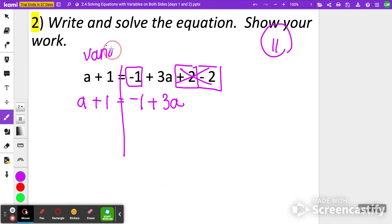Again, I'm going to try to move all my variables to the left. So here we go. I'm going to subtract 3a from both sides. Remember this a by itself technically has a 1. So 1 minus 3a is negative 2a plus 1 is equal to negative 1.